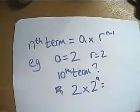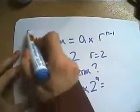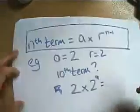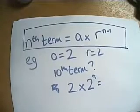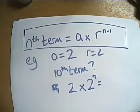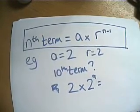So ladies and gents, first of all, that's the first formula you need to learn about geometric series, the nth term formula. The nth term of geometric series is a times r to the power of n minus 1.